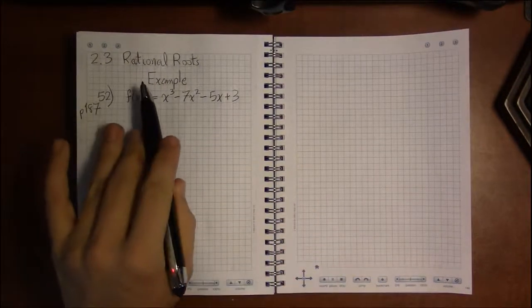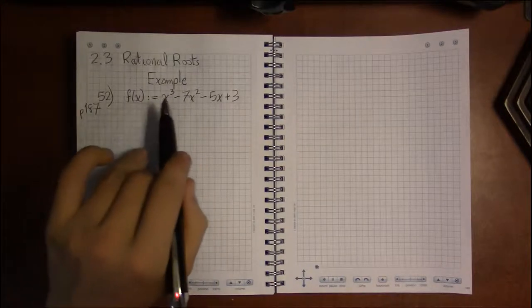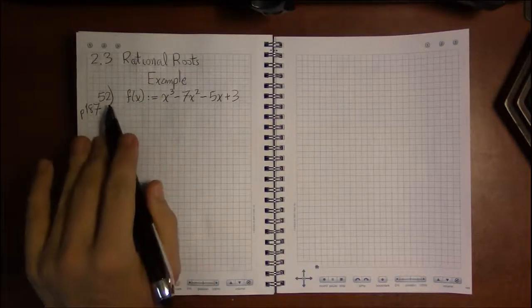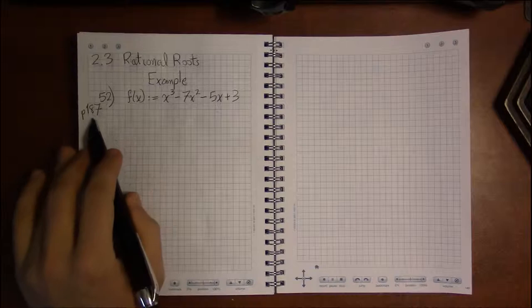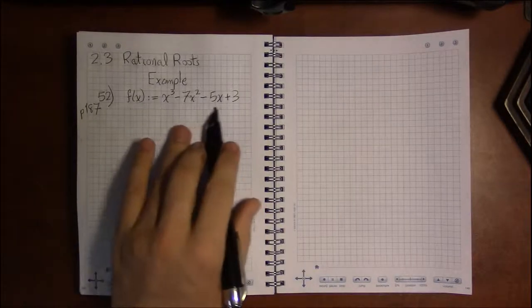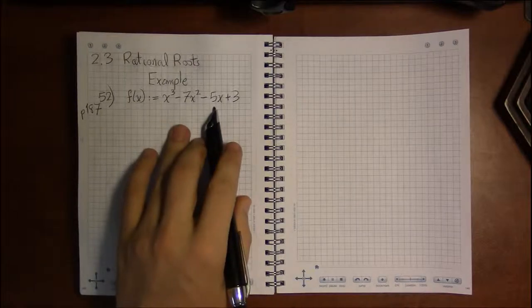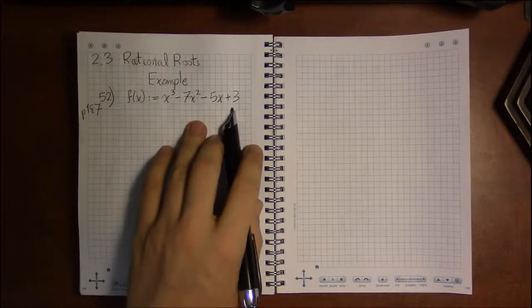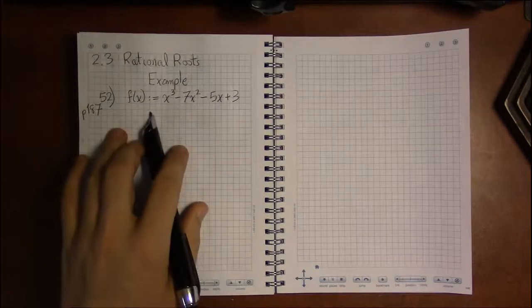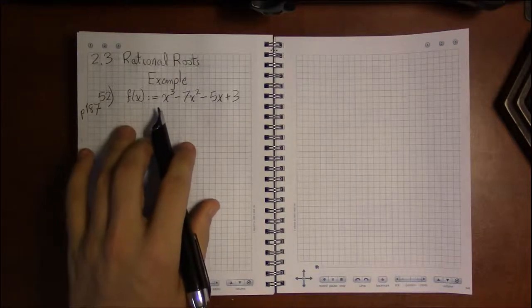Alright, let's take a look at some examples of the rational roots theorem. I'm looking at exercise 52 on page 1 at E7. We're given the polynomial x cubed minus 7x squared minus 5x plus 3, and we're asked to find all of the zeros of f.